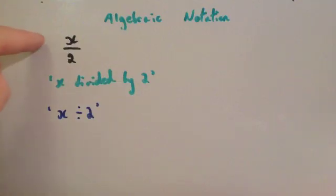This time I've written x with a line and 2 beneath it. The line in this is like a fraction, and it means divided by. So this reads x divided by 2. Again, in algebra, you don't write this divided by sign.